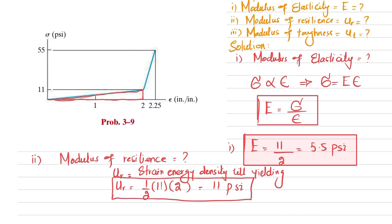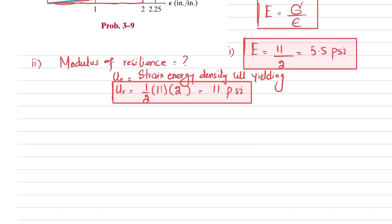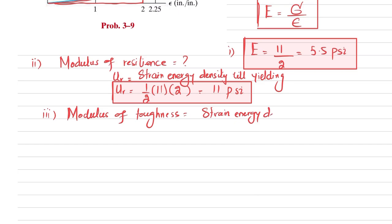Now we move to the third part, which is about the modulus of toughness. Modulus of toughness is defined as the strain energy density — strain energy per unit volume — absorbed by the material up to the point of fracture. This is known as the modulus of toughness.